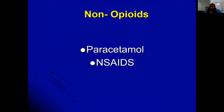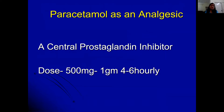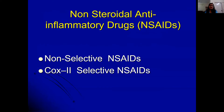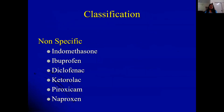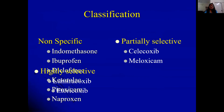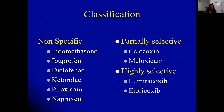Non-opioids include paracetamol and non-steroidal anti-inflammatory medications — both selective and non-selective NSAIDs. The classic traditional NSAIDs, as well as highly selective and partially selective NSAIDs, constitute step one of the analgesic ladder.